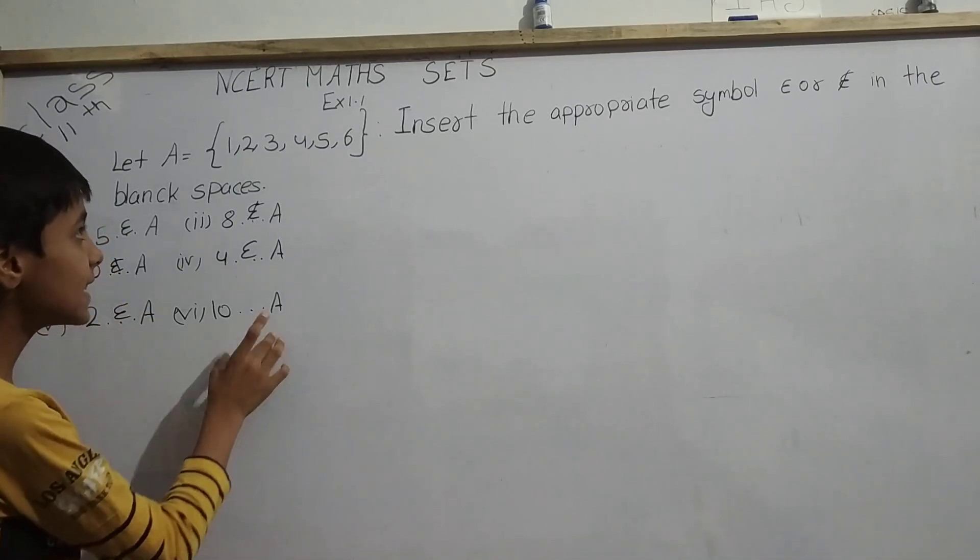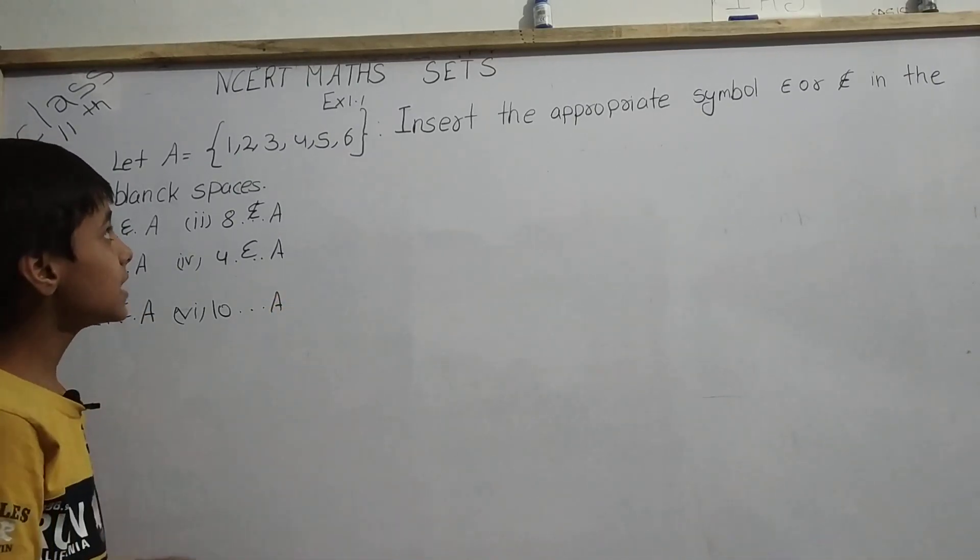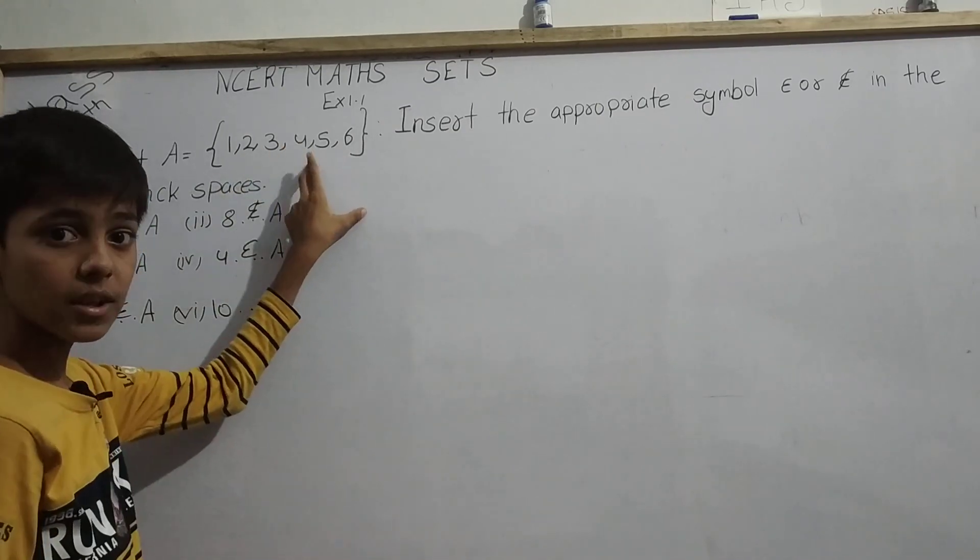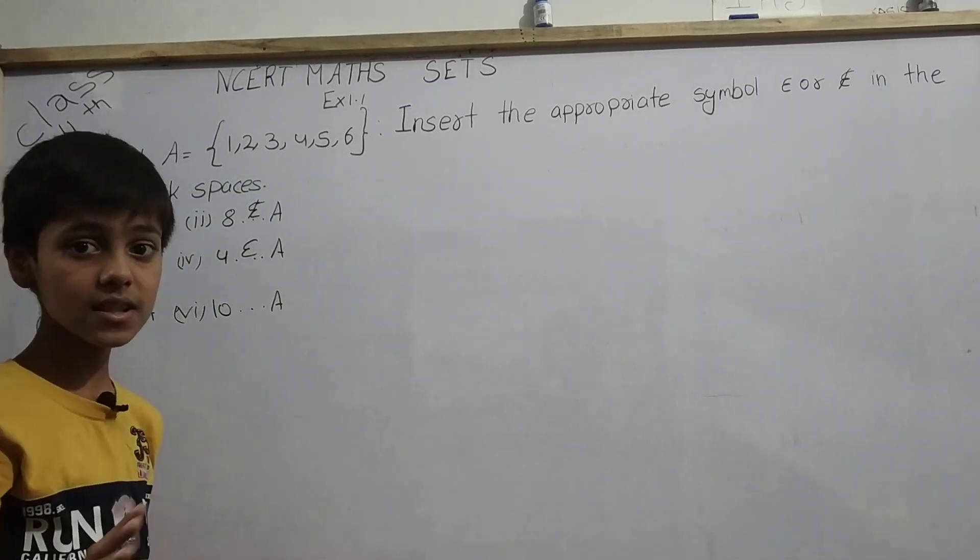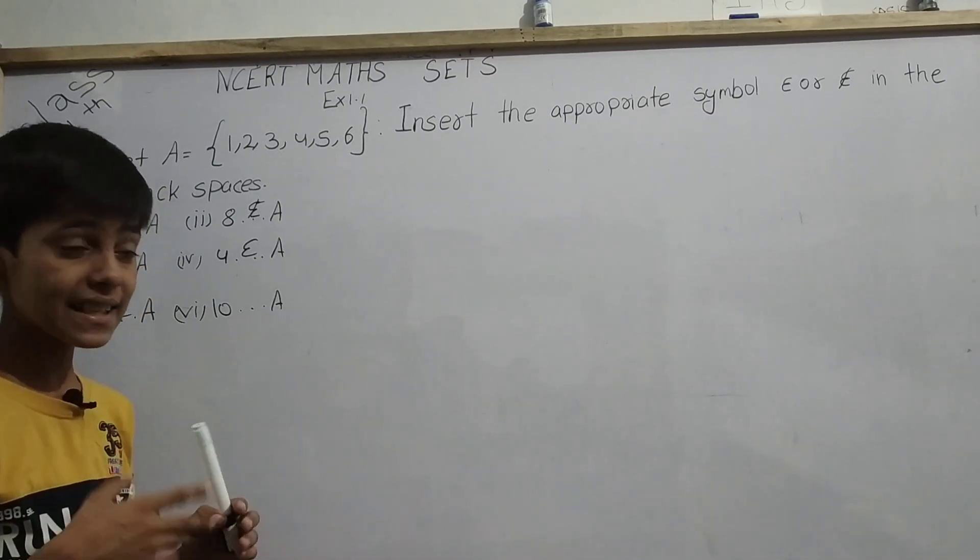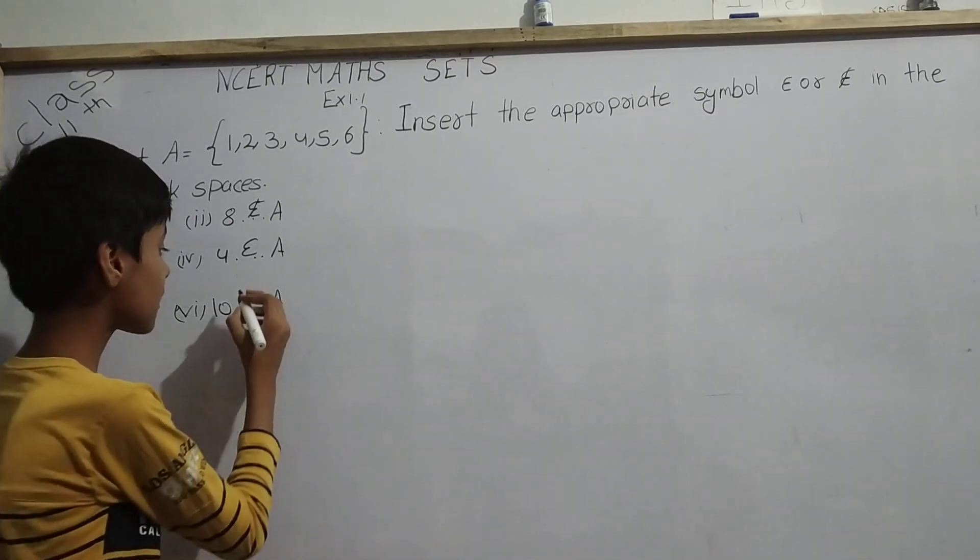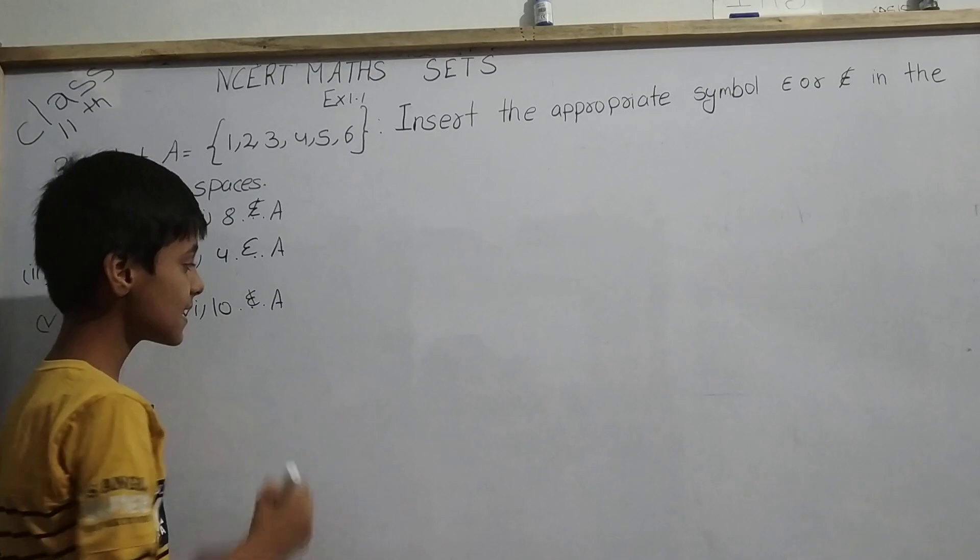Next is 10 dash A. But here we have only 1, 2, 3, 4, 5, and 6. Where there is no spot for 10, this is the main reason we will put epsilon and cross it, that is epsilon not.